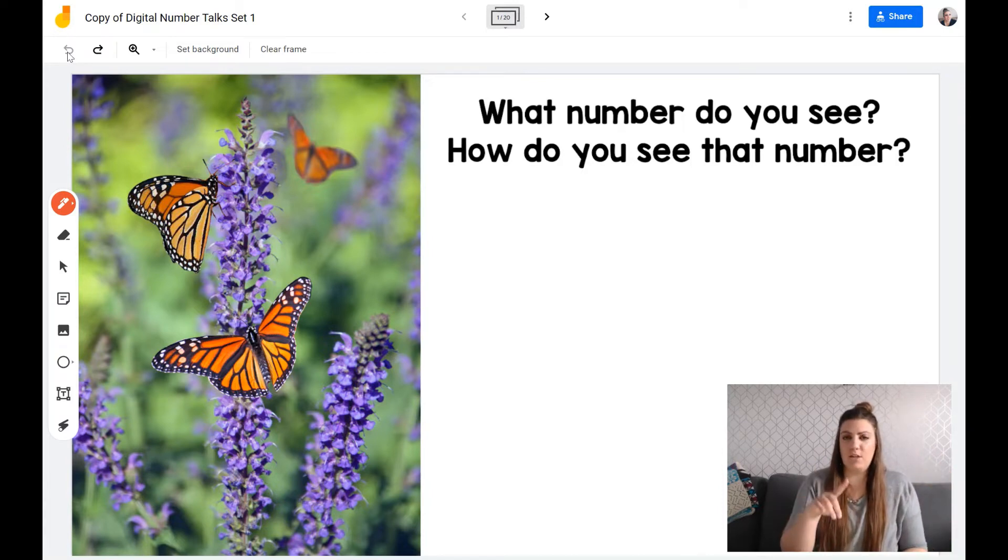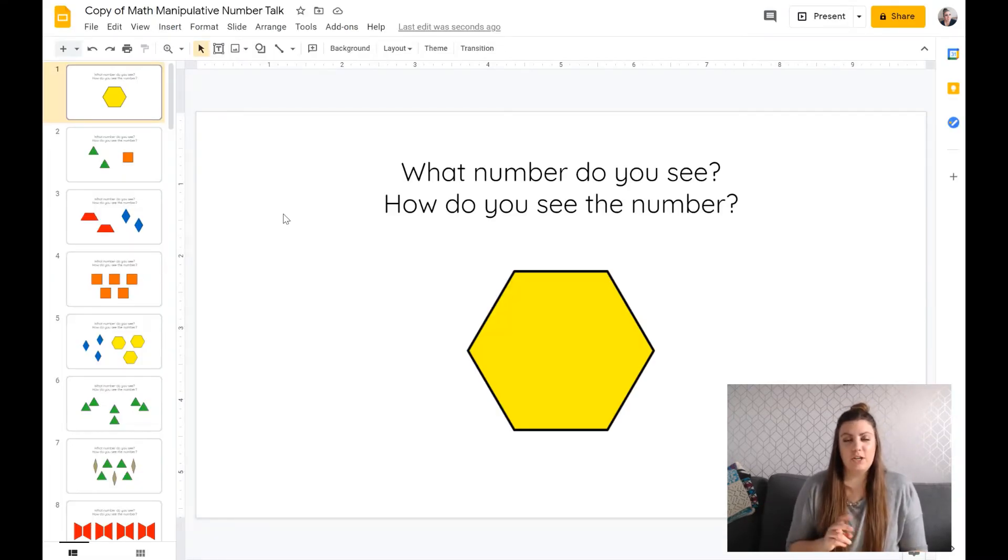And again, I have the Jamboard version and the Google slide version of these Jamboards available. So it's easy for you to prep. You don't have to do anything beforehand. You can just jump on and pick a couple of slides, just like I did there. But that was the Jamboard activity. What I'm going to do now is just switch over and show you what this looks like on a Google slide instead. And that's what you like to use for the Google slide version.